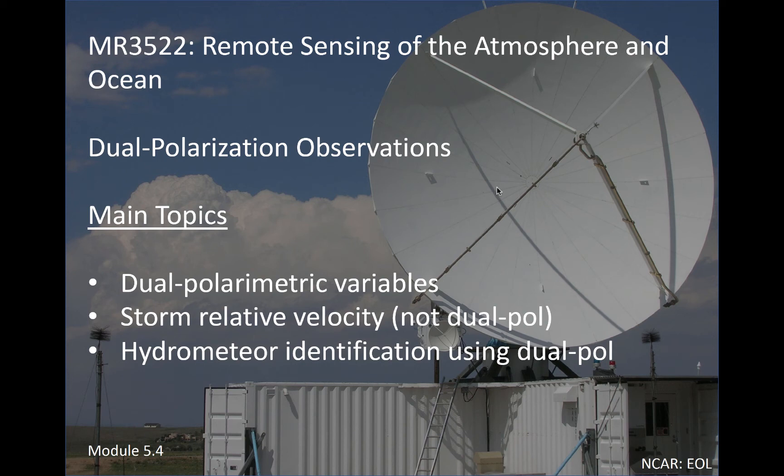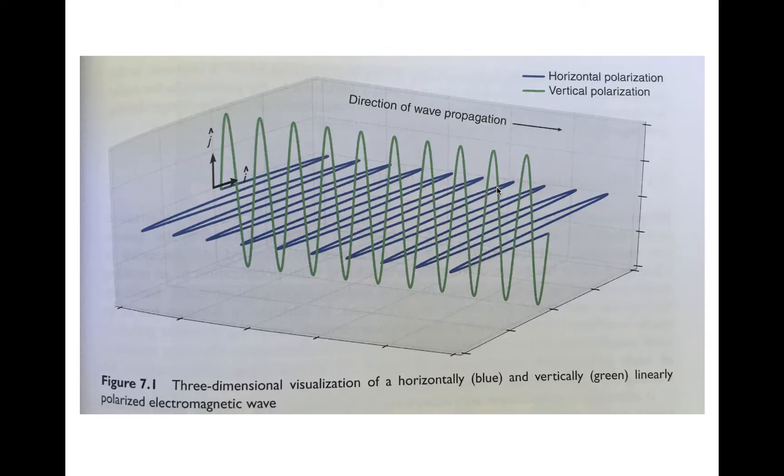This module will review various parameters that can be measured using radar data, including dual-polarimetric observations. Recall that radiation can propagate with a variety of polarizations depending on the orientation of the electrical field, or at a quantum level, the spin of photons. Radiation that propagates along just one dimension is either horizontally or vertically linearly polarized. This is just a picture of that here with the blue line representing an example of horizontal polarization and the green line of vertical polarization.